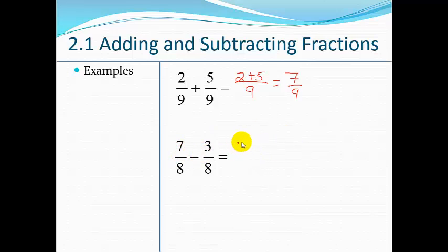And then here's one for subtraction: 7/8 minus 3/8. Remember, we don't add these or subtract them. 7 minus 3 is 4/8, but I can simplify this. So I know that I can divide both by 4, so that's going to be 1/2.